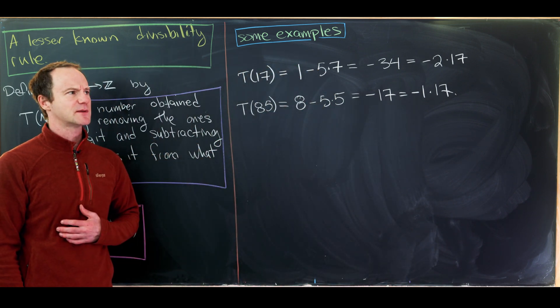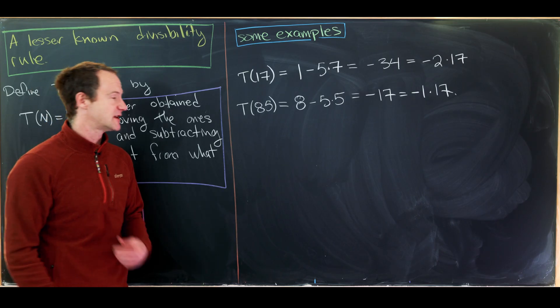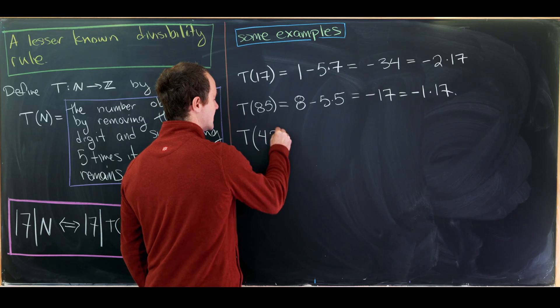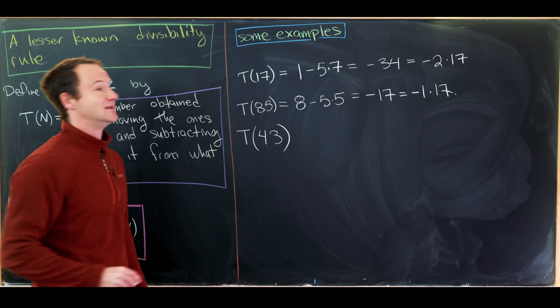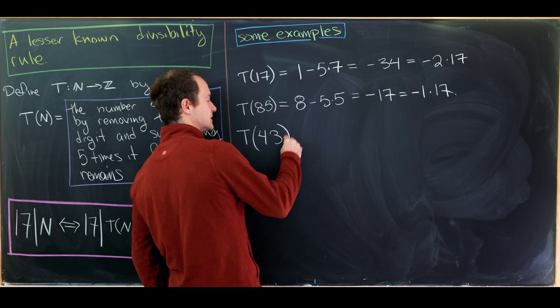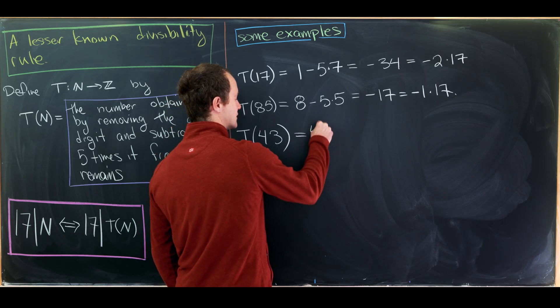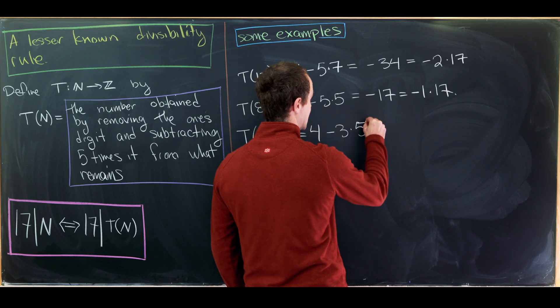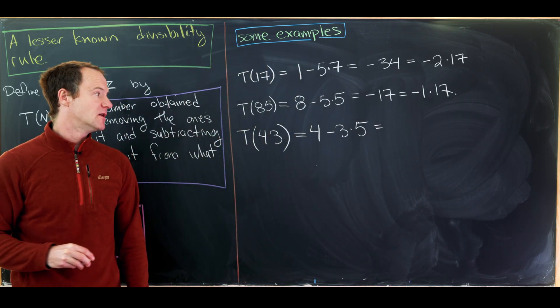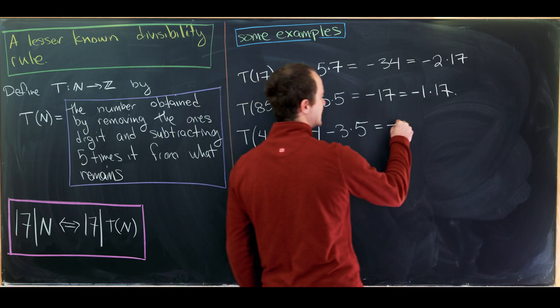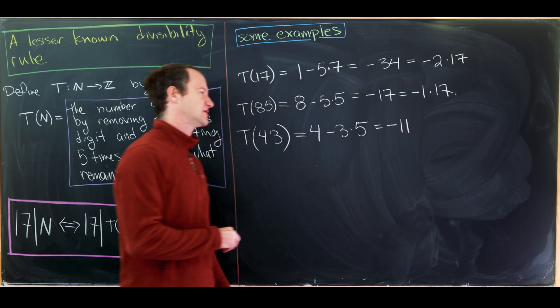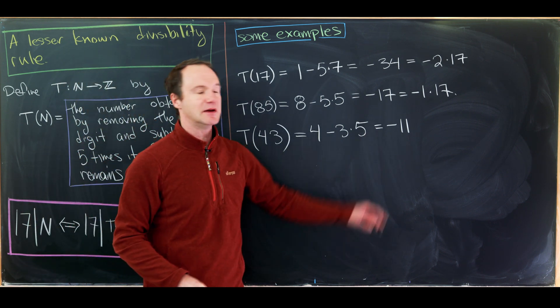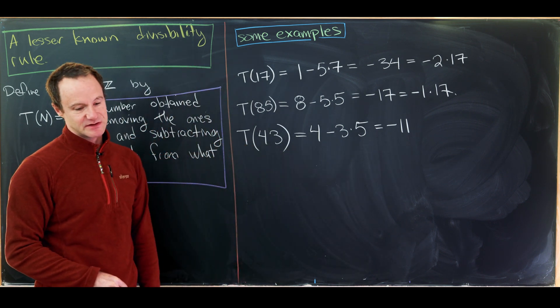Let's maybe look at something that's not a multiple of 17. Let's maybe do T(43). So that's not a multiple of 17. So if we apply our transformation, we'll have 4 minus 3 times 5. So that's going to be 4 minus 15. But 4 minus 15 will be negative 11. That's not a multiple of 17. So we started with a non-multiple of 17 and we ended with a non-multiple of 17.